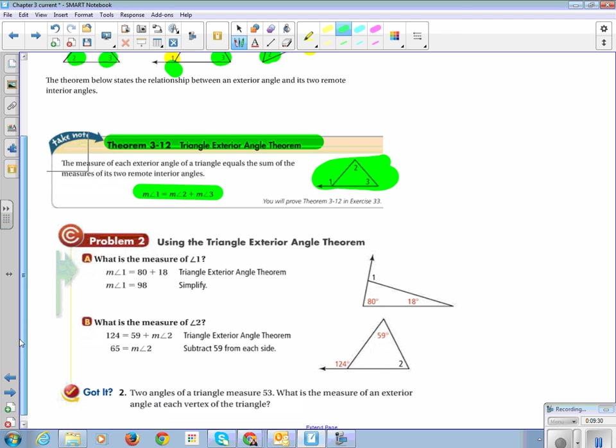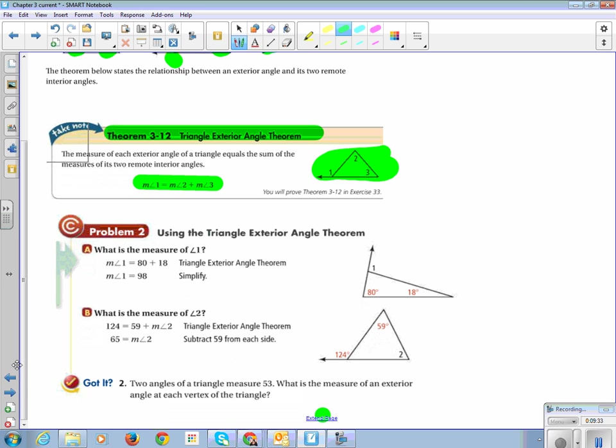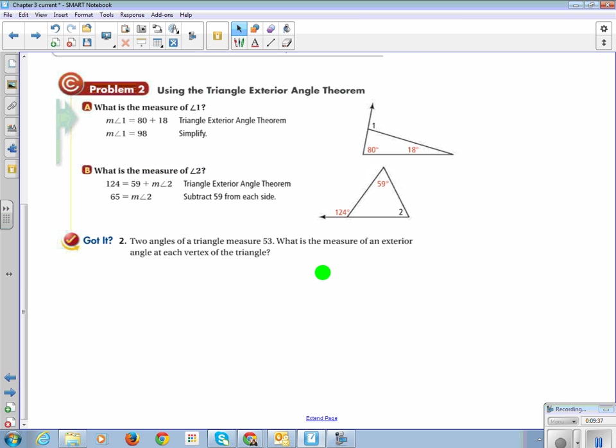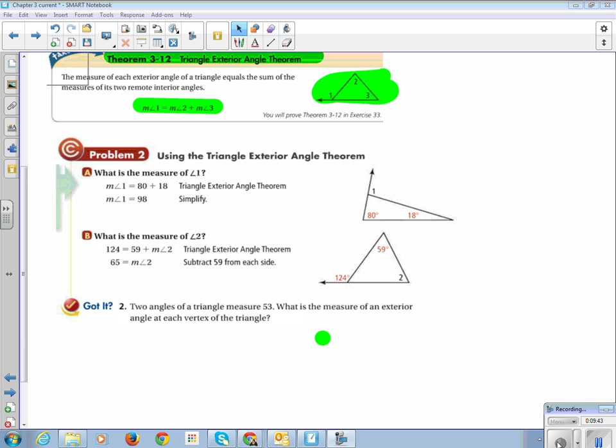All right. So, how do we use the exterior angle theorem? When we're given two angles on the exterior, we add them up to be the interior. So if we look at problem two, in this case, to find angle one, we added 80 and 18, and it's 98. In this case, we were missing a remote interior. So we set up a little equation. 124 equals 59 plus that angle. Subtract 59 from both sides and it equals 65.